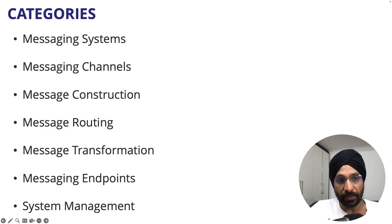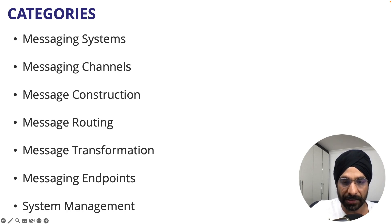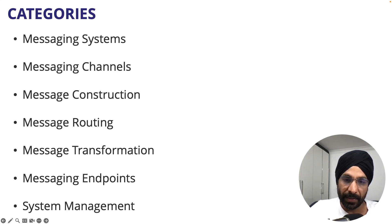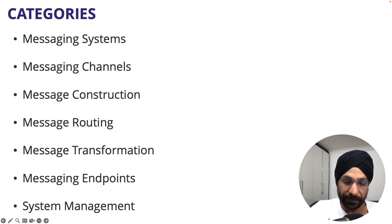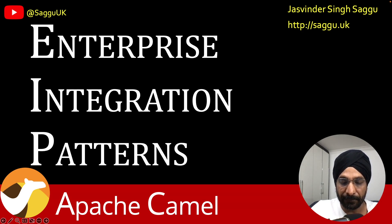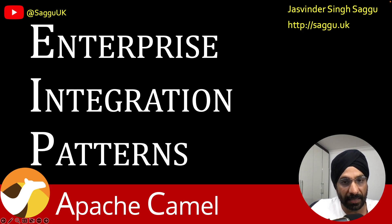There are also categories for messaging endpoints. Last but not least, system management — which covers how you can monitor the health of your application, check logging, and what design patterns you can implement to have good logging. I highly recommend you look at this book and this framework called Apache Camel. On my channel I've already created a few videos using Apache Camel and built some real-world use cases.